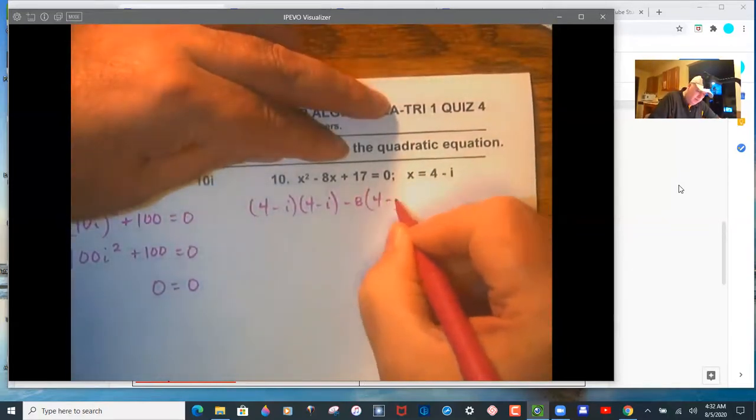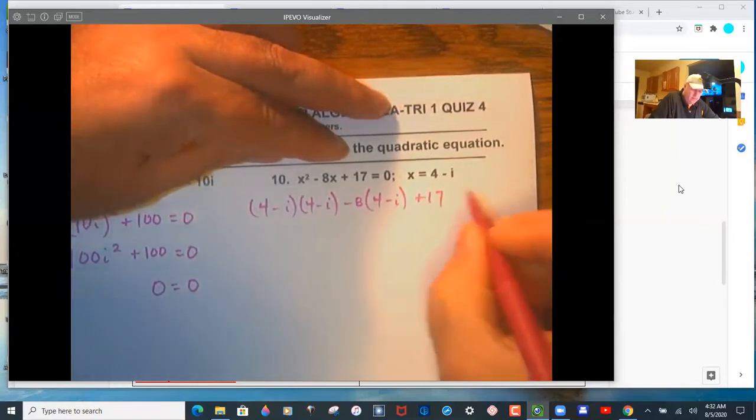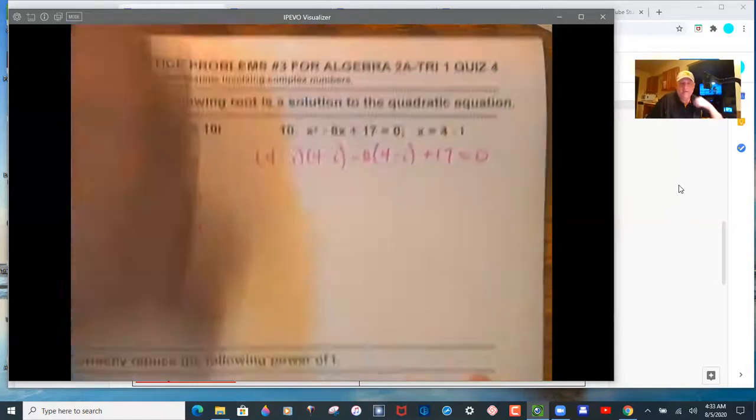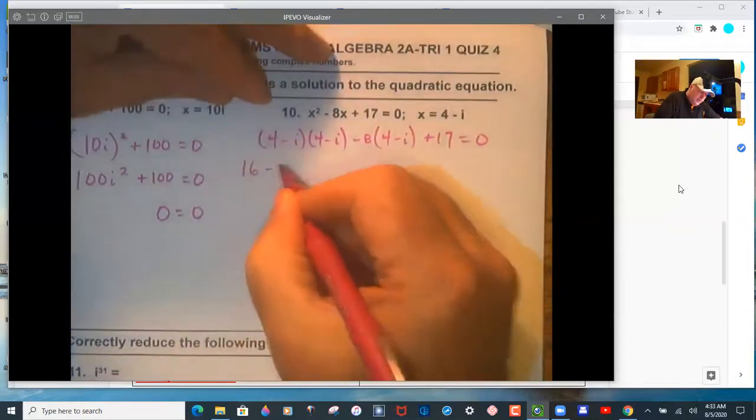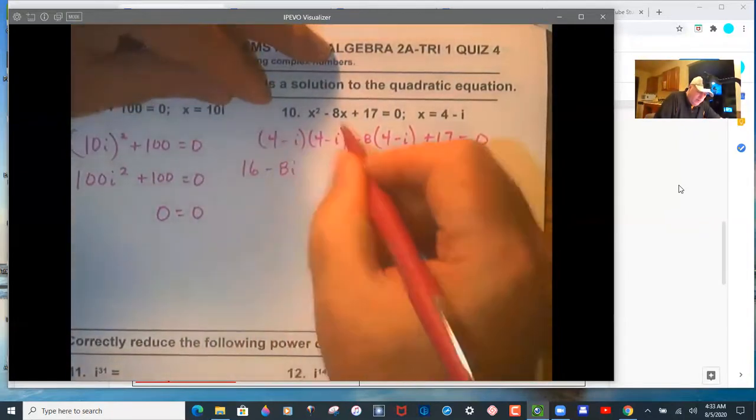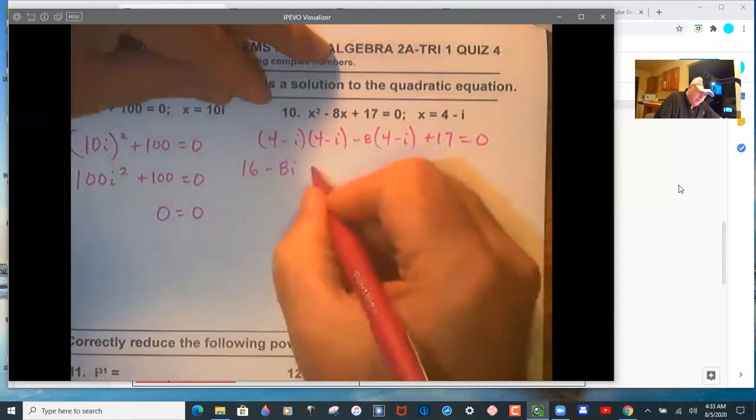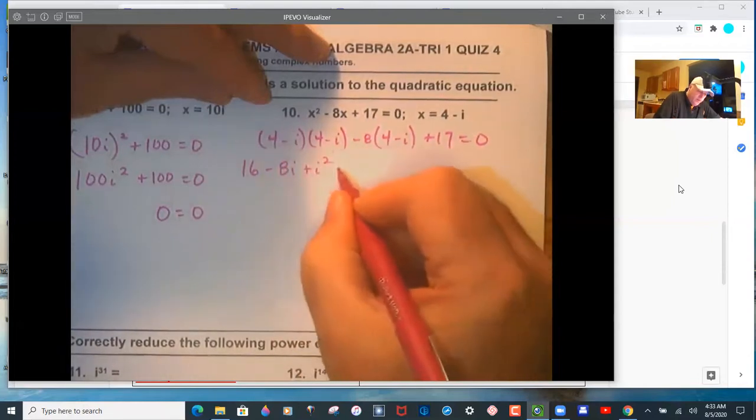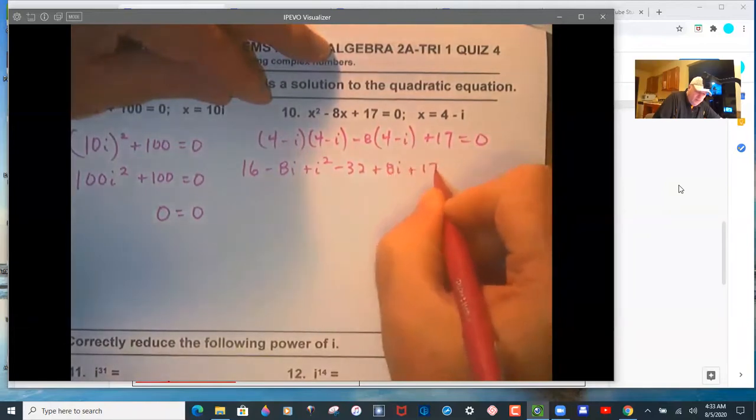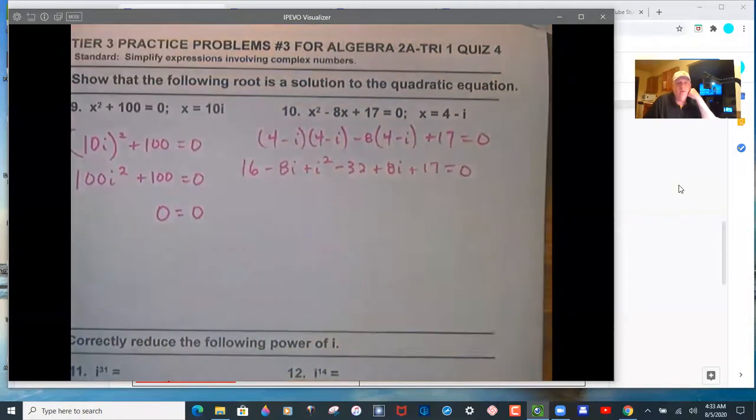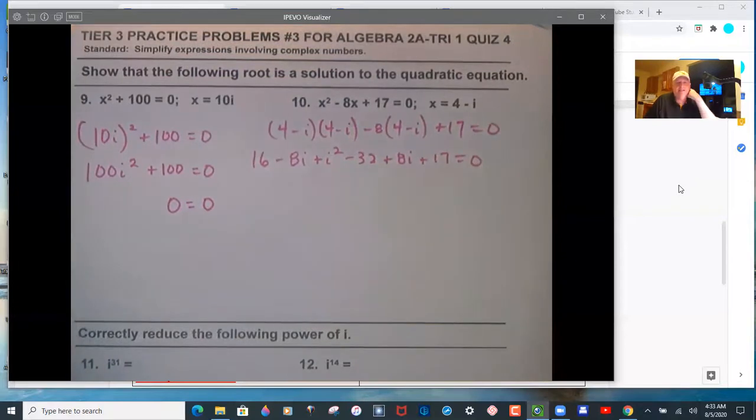This is definitely a little bit of work. I need to see the correct terms. So 16 minus 8i outer 2 plus center 2, so negative 4i, negative 4i, plus i squared, minus 32, plus 8i, plus 17.